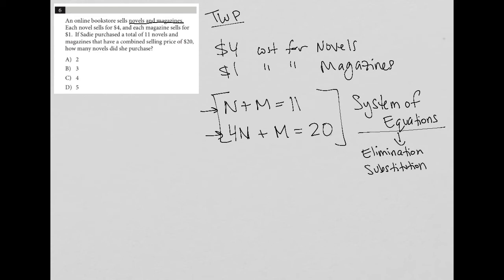Hopefully those terms sound familiar to you. I'm going to choose to use elimination here. The reason for that is I see that I have M here and M there, which means if I subtract the bottom equation from the top one, I could then eliminate the M value there.